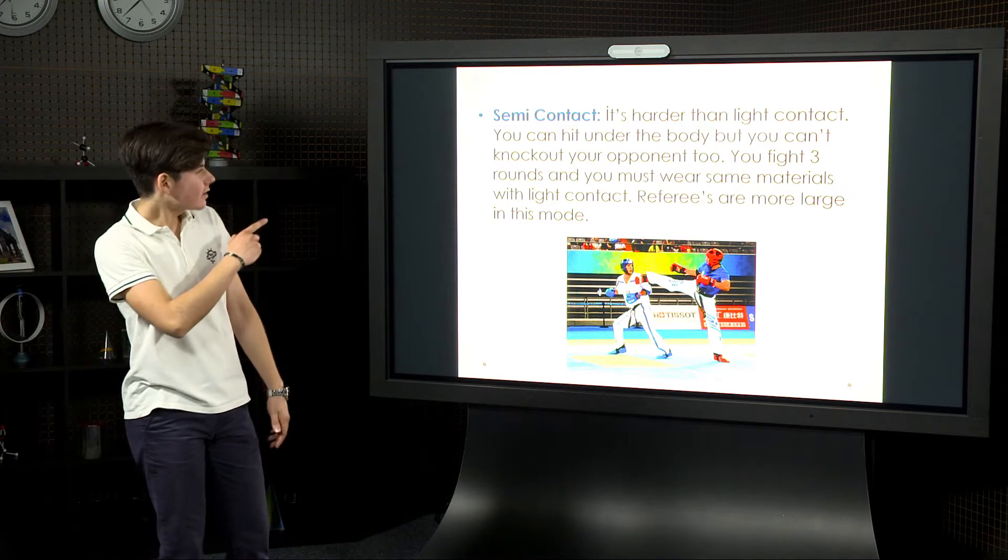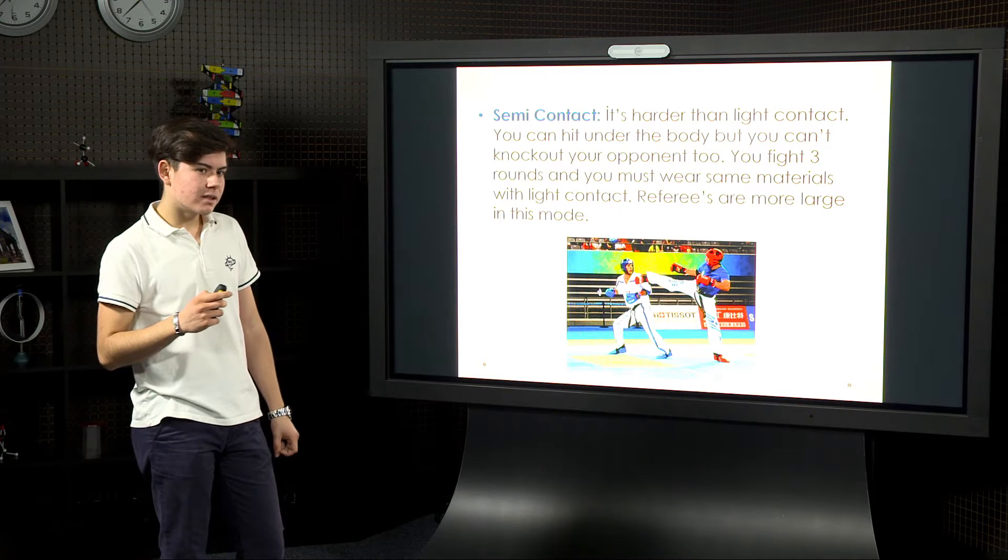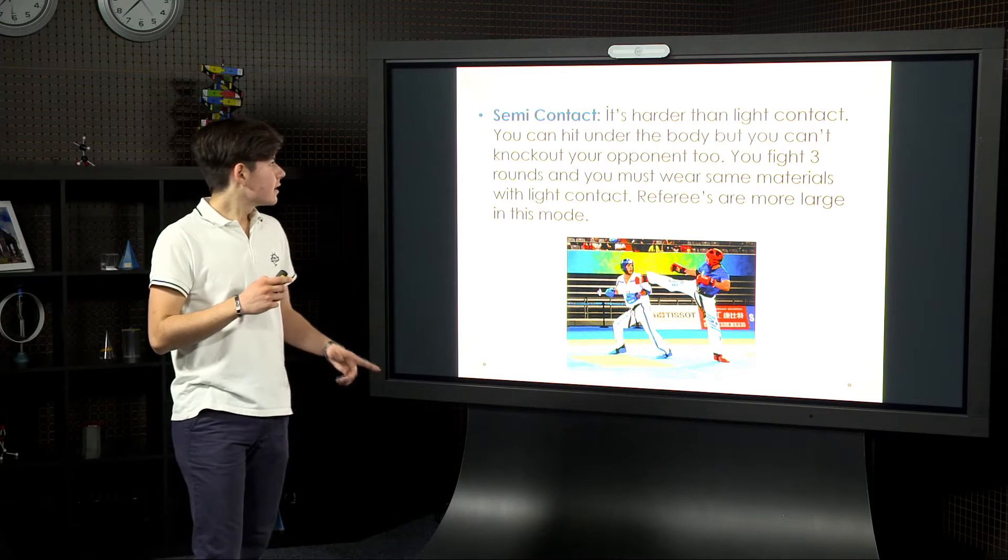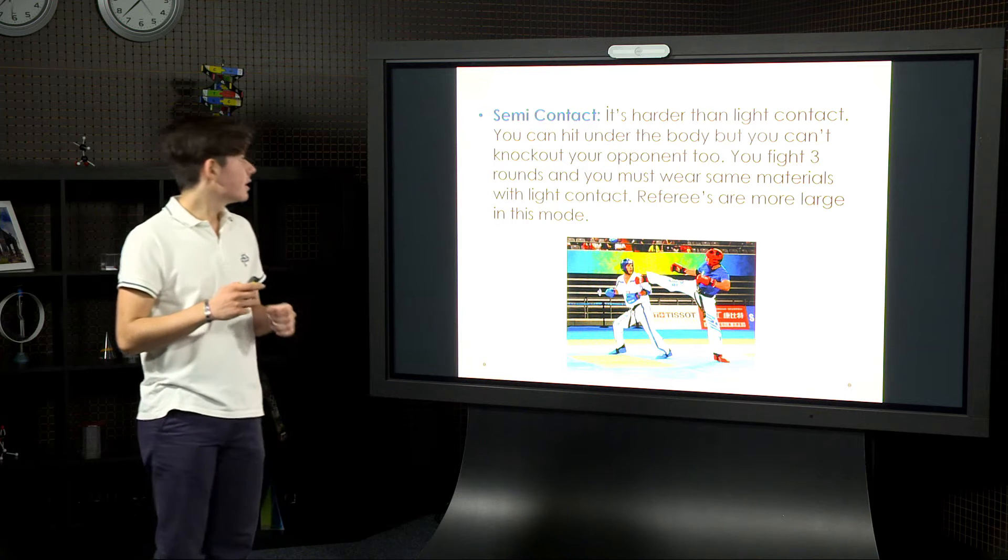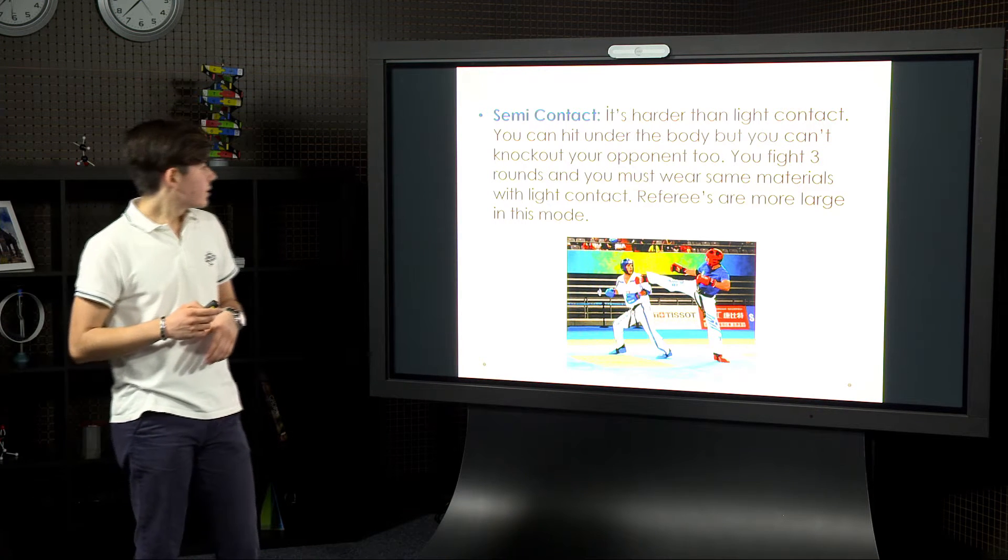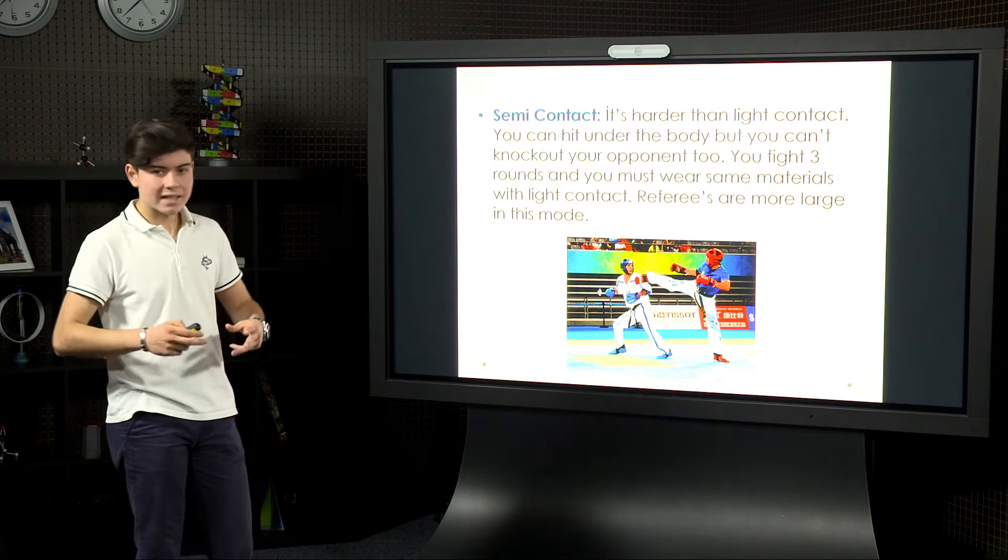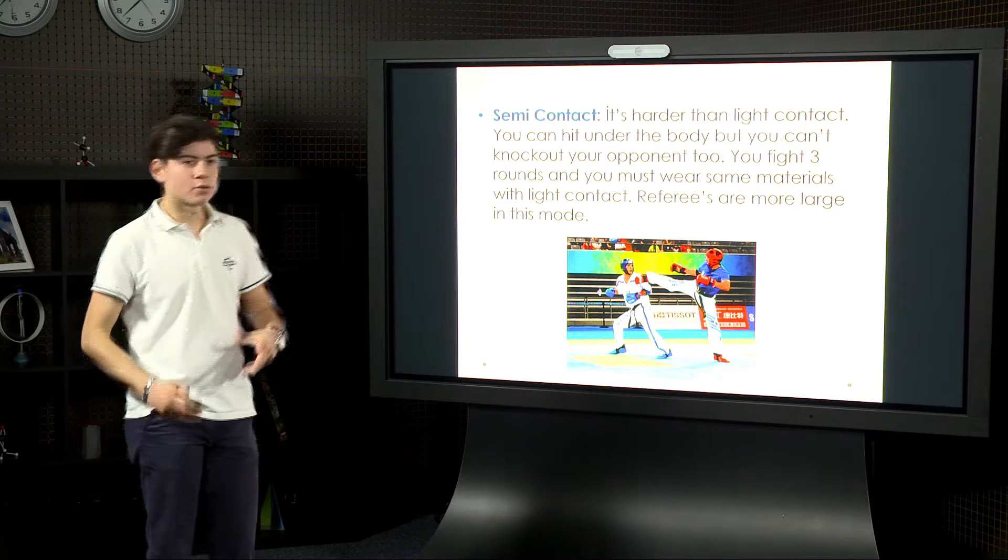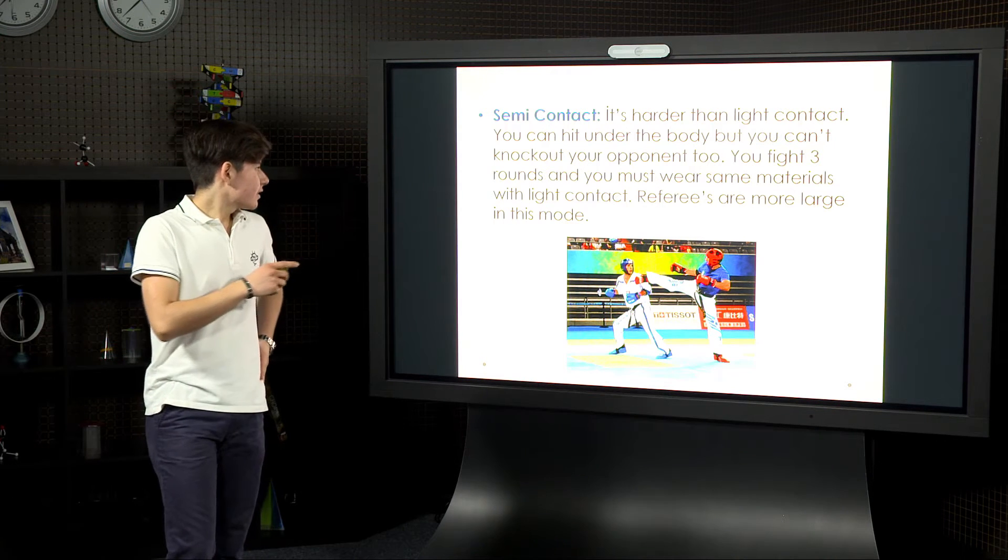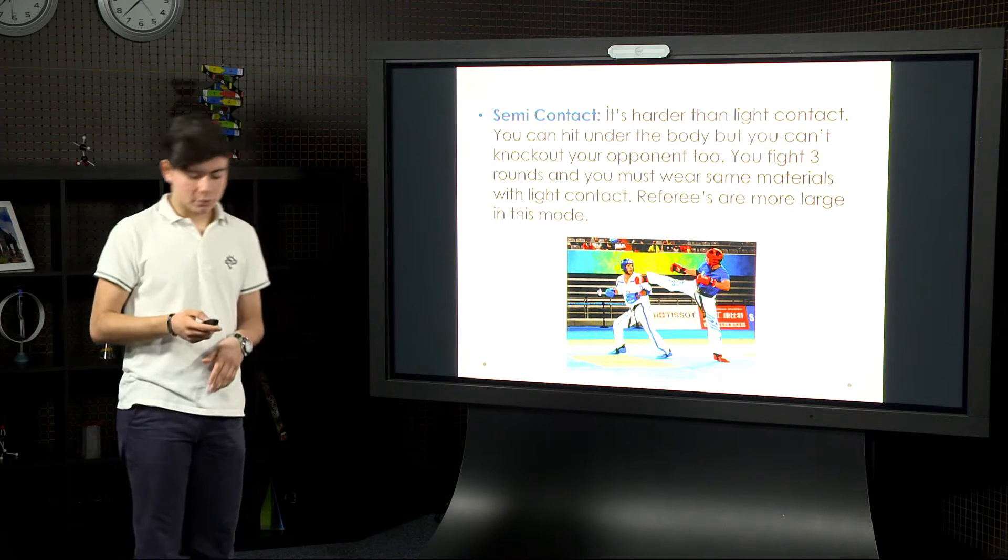And semi-contact. It's harder than light contact. You can hit under the body but you can't knock out your opponent. You fight 3 rounds and you must wear same materials with light contact. Referees are more large in this mode because it's a little bit harder than the light contact one.